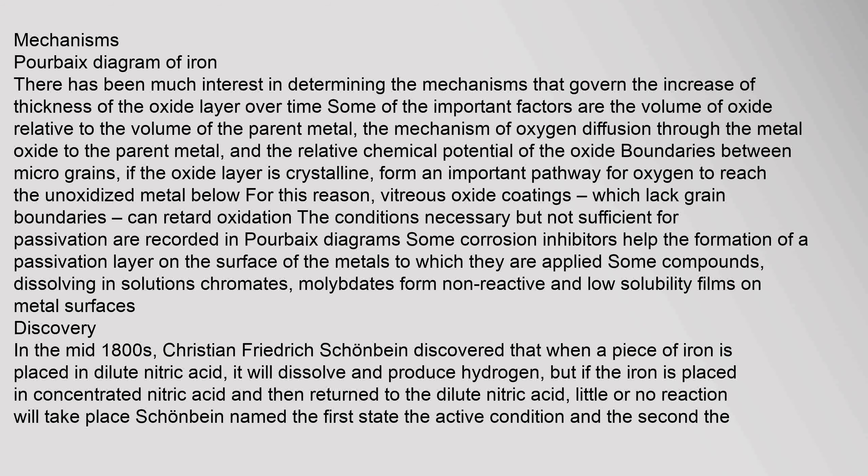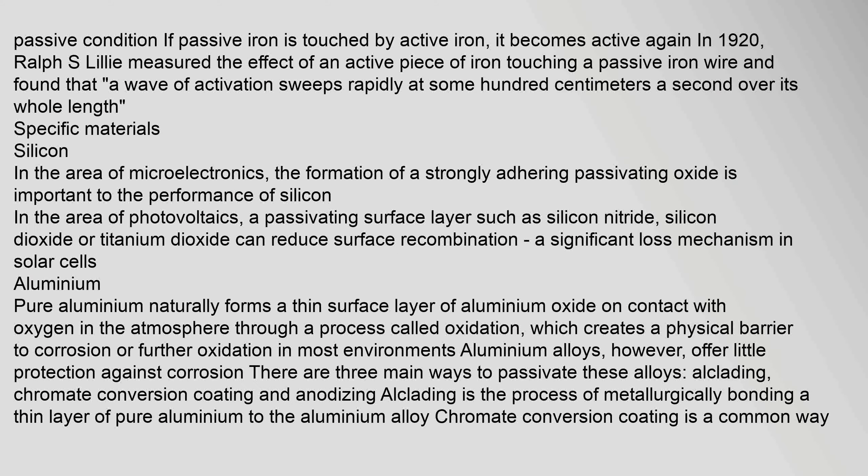Some corrosion inhibitors help the formation of a passivation layer on the surface of the metals to which they are applied. Some compounds dissolving in solutions — chromates, molybdates — form non-reactive and low-solubility films on metal surfaces. In the mid-1800s, Christian Friedrich Schoenbein discovered that when a piece of iron is placed in dilute nitric acid, it will dissolve and produce hydrogen, but if the iron is placed in concentrated nitric acid and then returned to the dilute nitric acid, little or no reaction will take place.